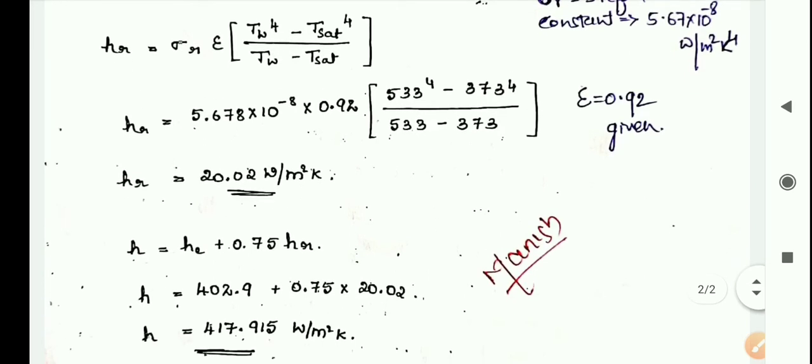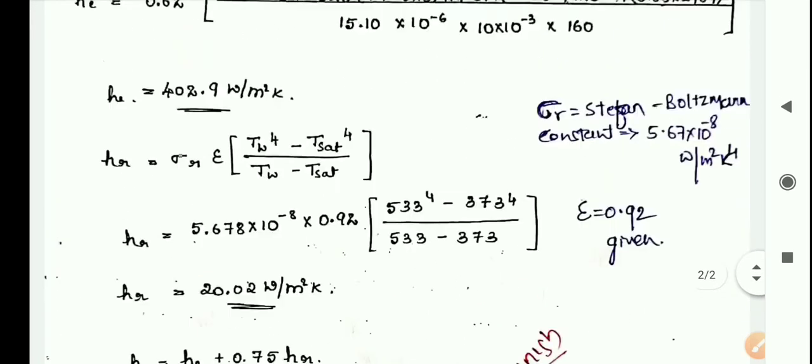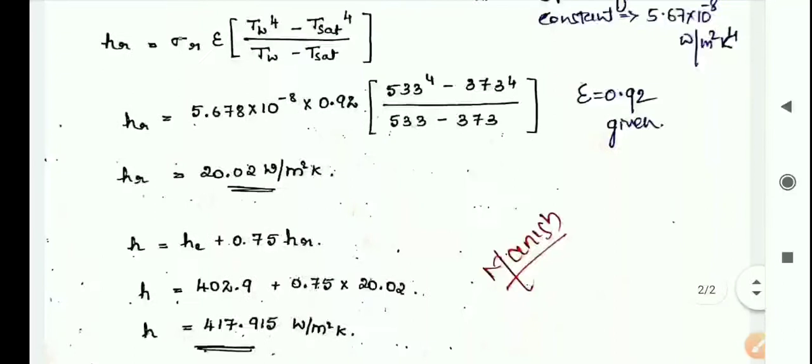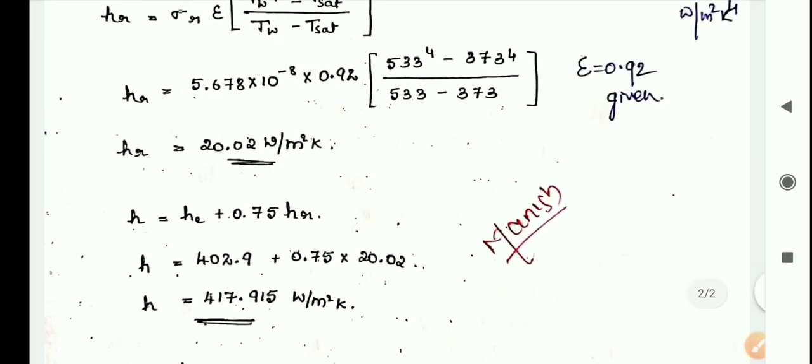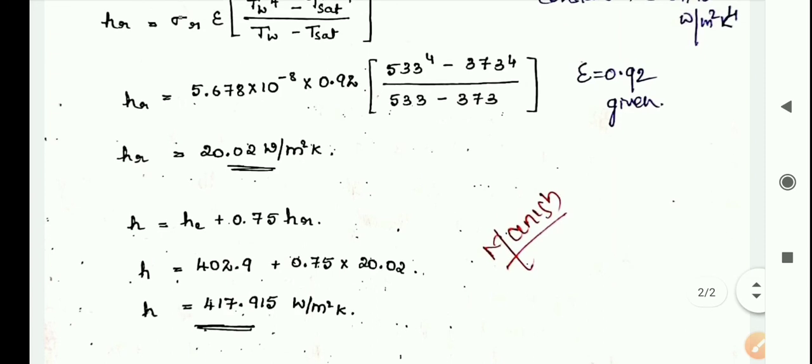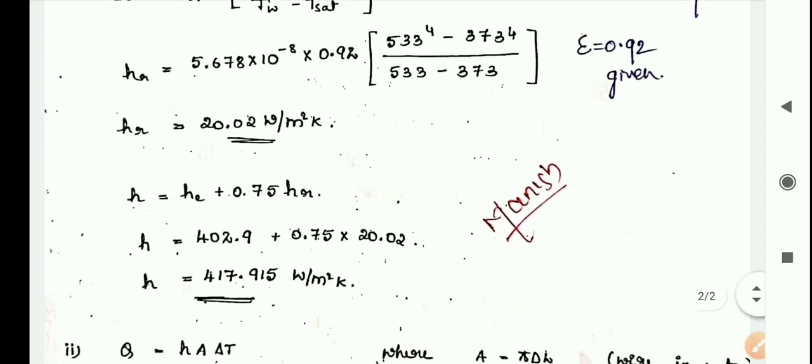Now substitute both hc and hr values in the main formula, h equals hc plus 0.75 hr. So h equals hc value 402.9 plus 0.75 times hr value 20.02. The h value is 417.915 Watt per meter square Kelvin.